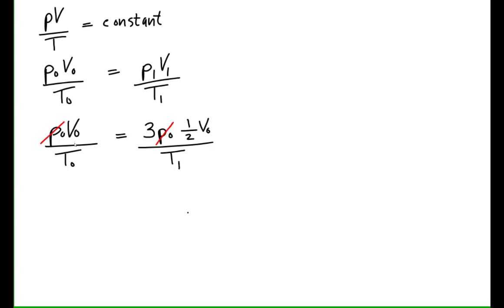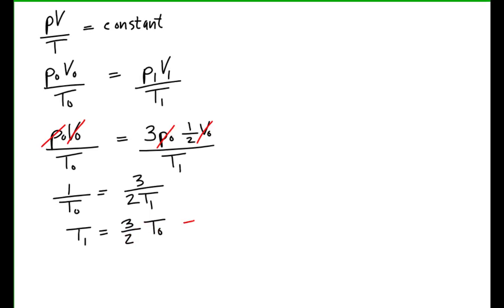We can simplify by eliminating the common variables on each side of the equality, which gives us an equation relating the initial and final temperatures. We see that the final temperature is one-and-a-half times the original temperature. We plug in 273 Kelvin as the initial temperature, converted from zero degrees Celsius. This yields 410 Kelvin as our final temperature, which is equivalent to 137 degrees Celsius.